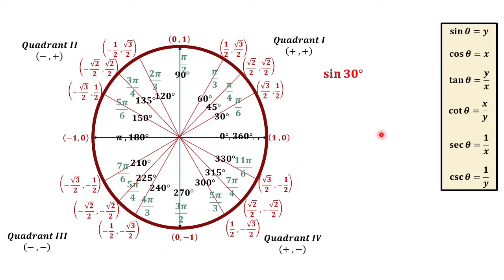So if we would like to get sine 30 degrees, we have to refer to the y-coordinate of this point. Therefore, sine 30 degrees is one-half.